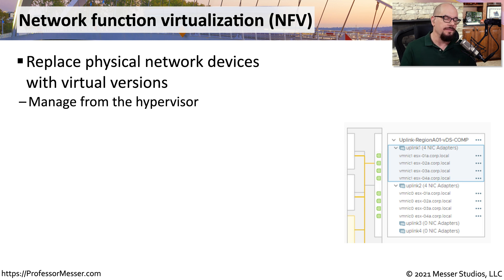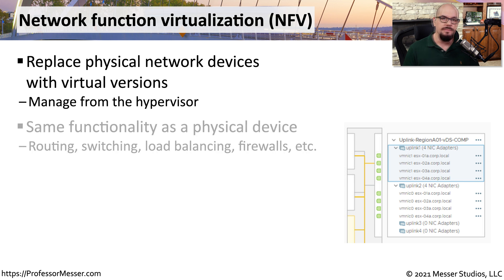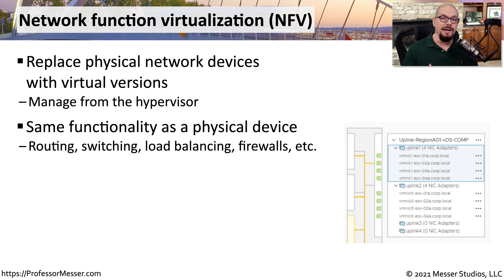This is called network function virtualization, or NFV, where we'll take all of our network devices and the entire network infrastructure, and we'll move it directly into the hypervisor. This means that all of our switching, all of our routing, our VLANs, our firewalls, and anything else on the network infrastructure are now contained within this virtual system.